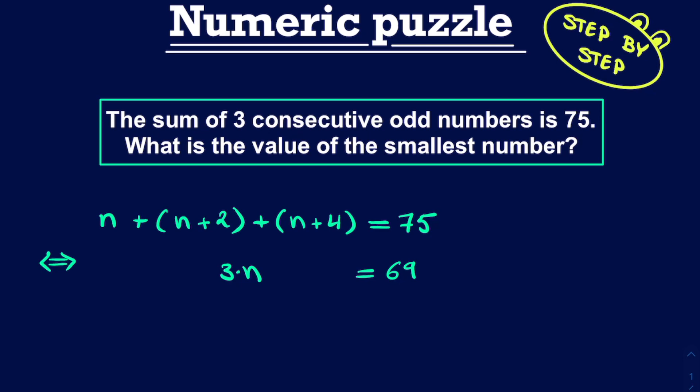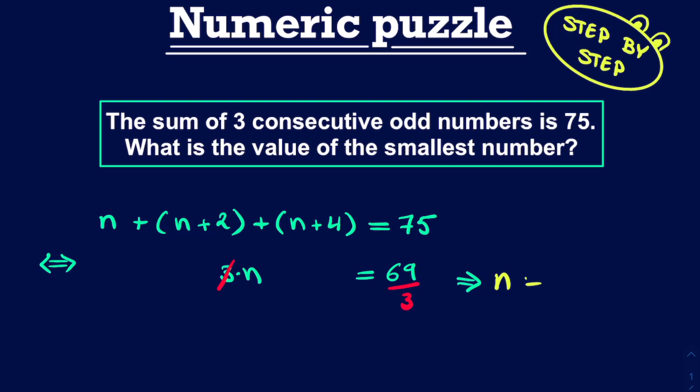Now the next step to isolate n completely is to get rid of this pre-factor 3 in front of the n. So what we do is we divide both sides of the equality sign by 3, and we get our final solution. Namely, that n is equal to 69 divided by 3, which is 23. So n is equal to 23. And this is the final solution of our puzzle.